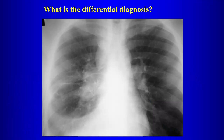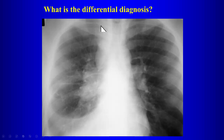On this radiograph, what's abnormal? There's right hilar lymphadenopathy — notice the left pulmonary artery is smooth while the right is lumpy and bumpy. There's also right paratracheal lymphadenopathy — too much density and opacity in that area. Additionally there is a right pleural effusion.